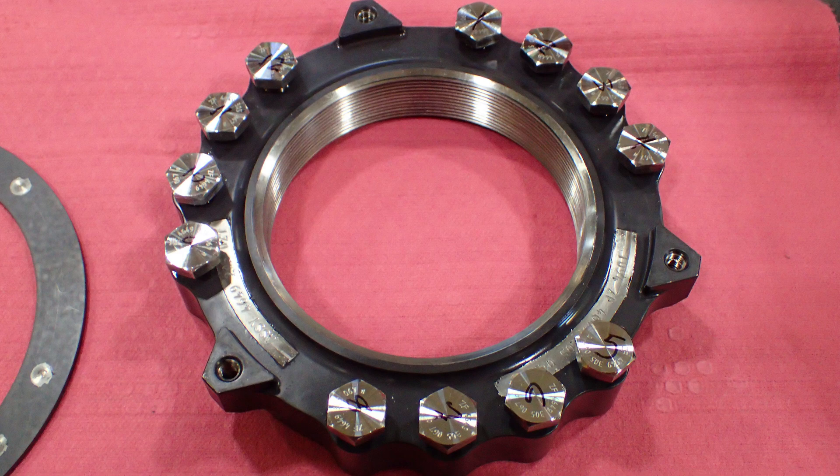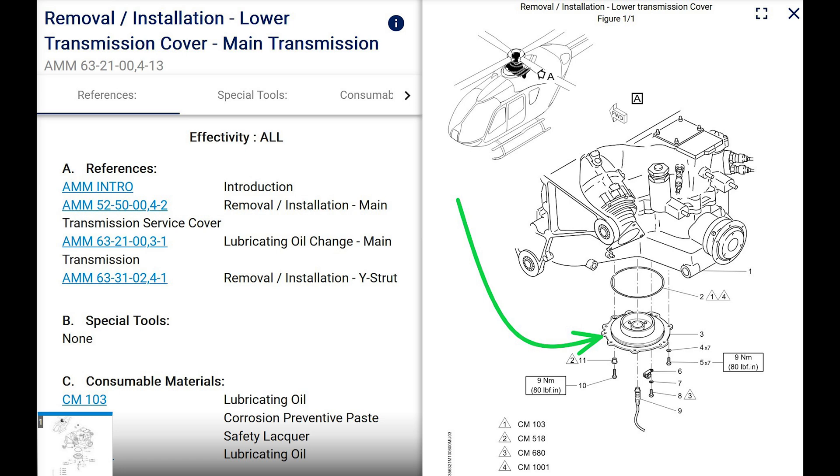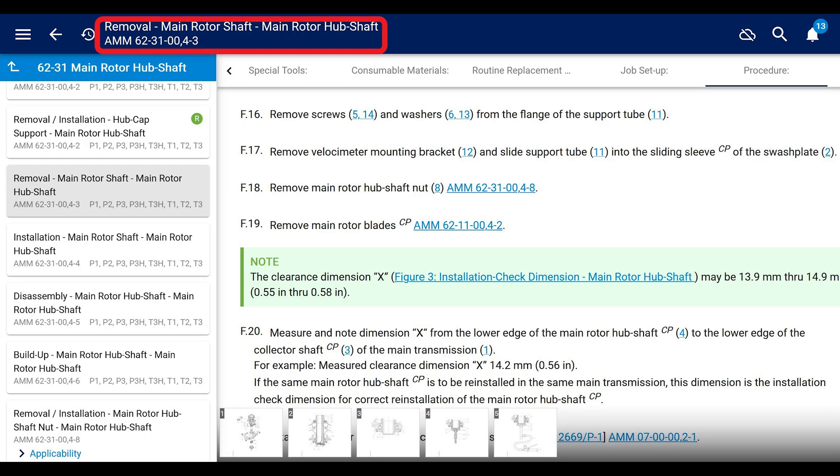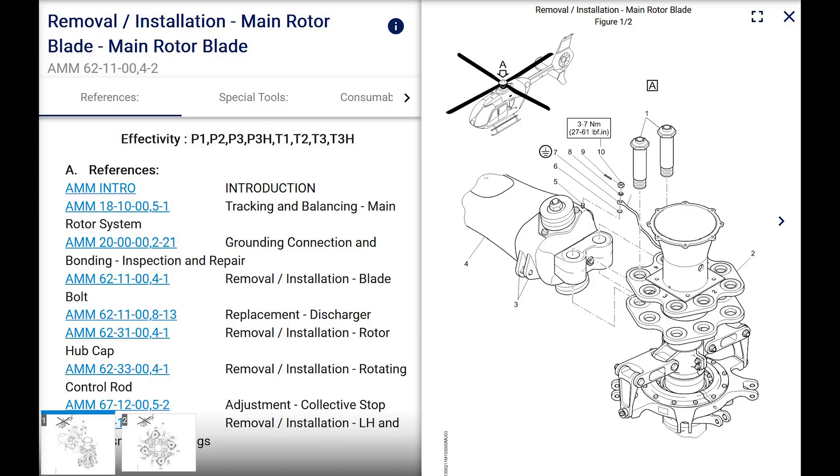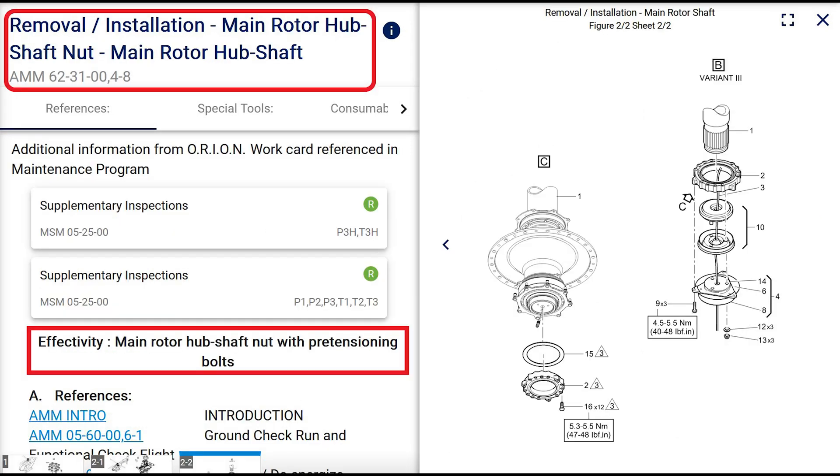Next thing we're going to do is remove the mast nut. It's inside the bottom of the transmission. So ensure that your transmission is drained of oil. Drop that lower plate. Reference the maintenance manual. Now we're going to a different section. Like I said, we've got to bounce around 100 different places. Oh, they want you to remove the mast nut and then the main rotor blades. I'd probably remove the blades before I take the mast nut out. Just makes me feel a little bit safer. Next section. Removal and installation of the main rotor hub shaft nut. This is the nut. There's two different types of nuts. This is AMM 6231004-8. There's a whole bunch of different setups here. But the one that we're dealing with is the closed retaining ring, post service bulletin 135-63016. And in this chapter, it is variant 3.